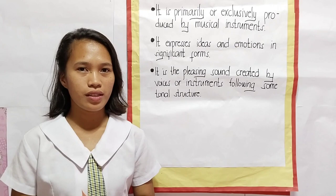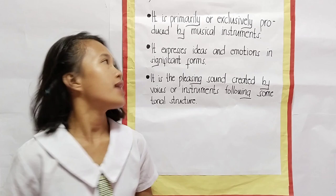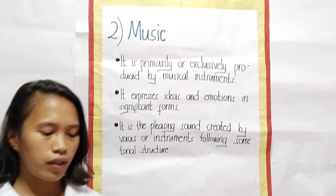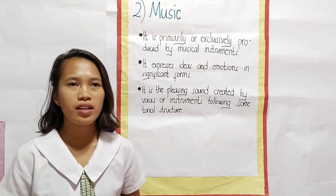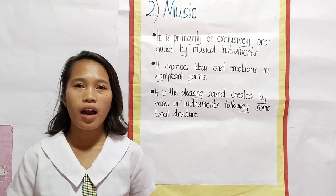Now let's proceed to music. Music can be a vocal sound or instrumental sound primarily or exclusively produced by musical instruments. The violin is a key example — especially in the rise of instrumental music, the violin is very important. When we play the violin and follow the written notes, the resulting sound is what we call music.